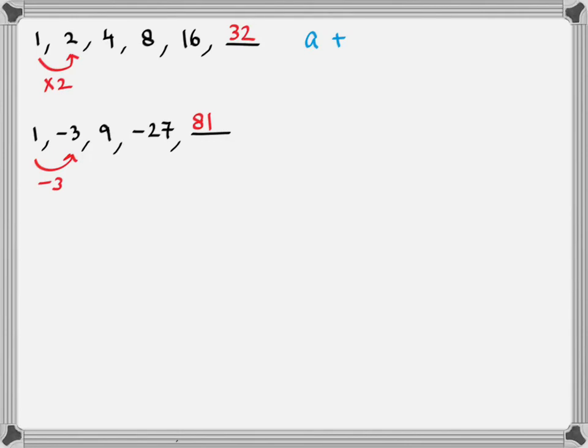Based upon these two simple series, any series in which the next term is obtained from the previous term by multiplication by a constant value — a common value, a common ratio — such a series is called a geometric progression. A stands for the first term, R stands for the common ratio, which is the same thing as the multiplication factor.